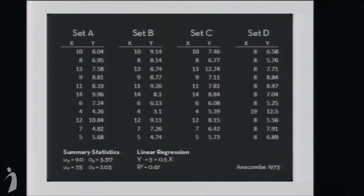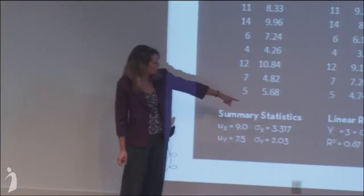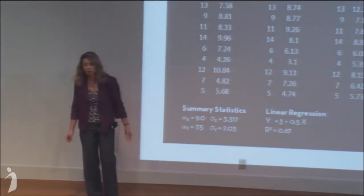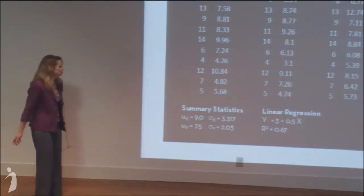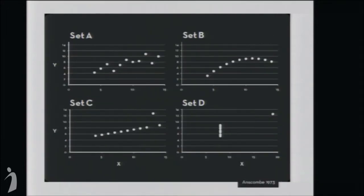A very classic example that's in every information visualization textbook is the Anscombe quartet, where you have four simple lists of XY pairs. If you just look at the numbers, you can't tell much about them. If you look at their summary statistics, they're all the same — they have the same mean, the same standard deviation, and if you do a regression, you get the same regression line and the same R-squared statistic. But if you plot them on an XY axis, they look radically different.